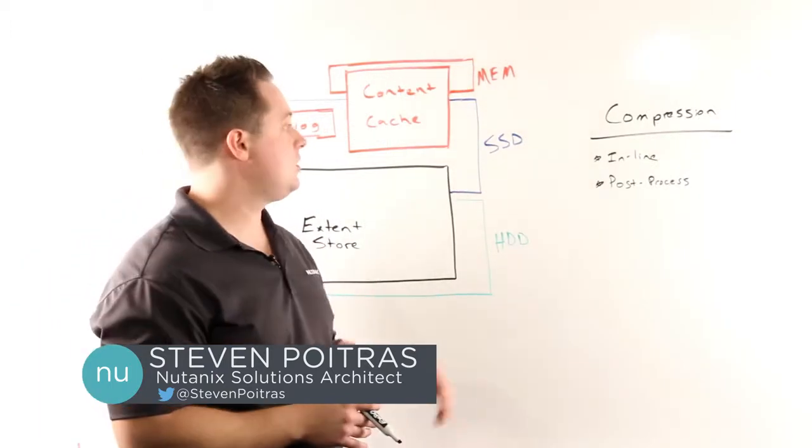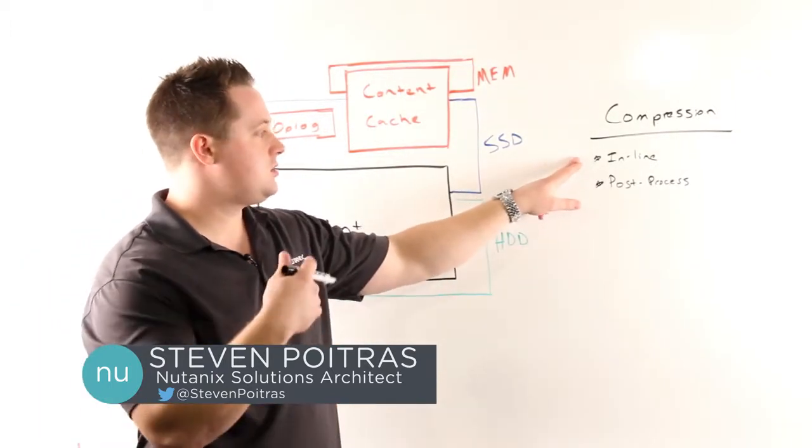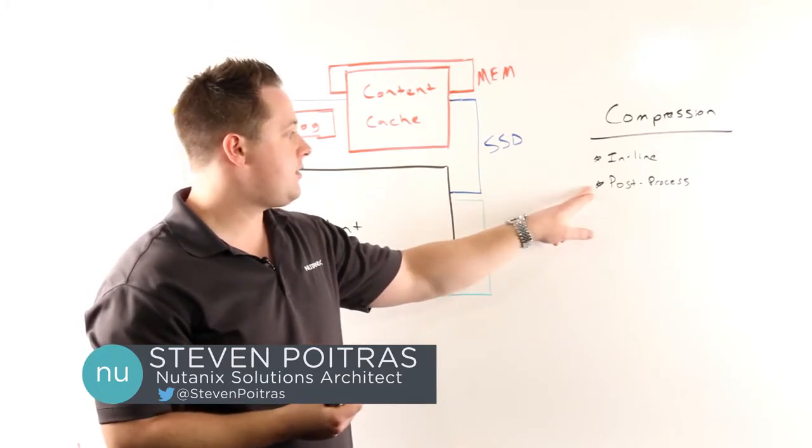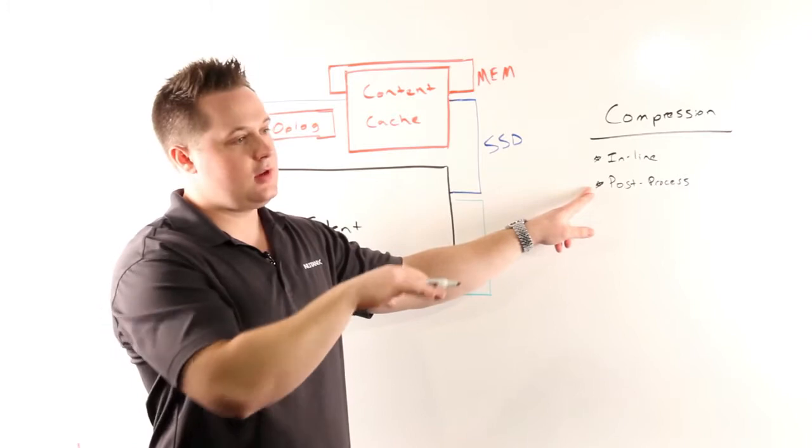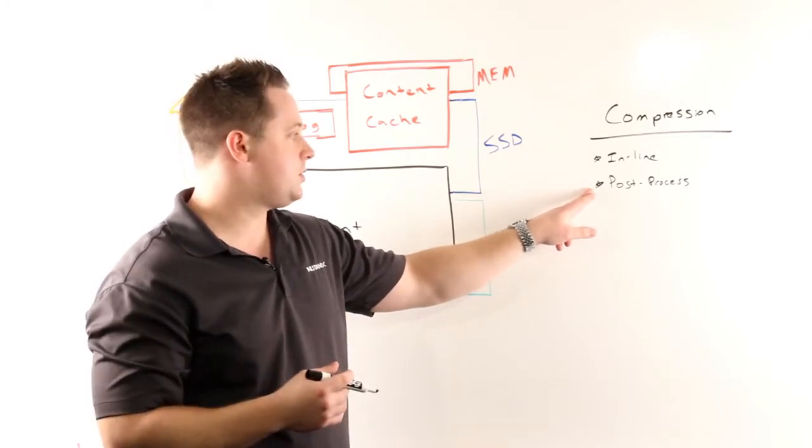Nutanix offers two types of compression. The first is inline, where the data is compressed before it is written, and the second is post-process, which is integrated with our ILM framework. As the data cools down, it becomes eligible to be compressed.